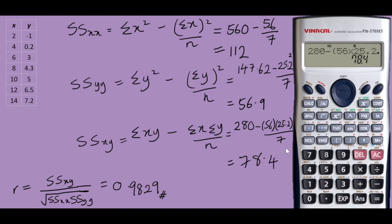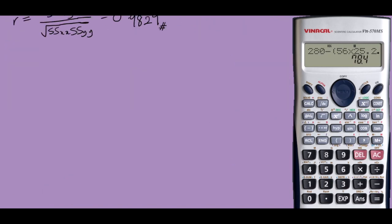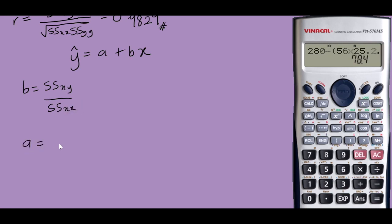To model your simple linear regression, you need the values of a and b. The simple linear regression is y-hat equals a plus bx, where b equals SSxy over SSxx, and a equals y-bar minus b times x-bar. You could directly get the values of a and b from your calculator.